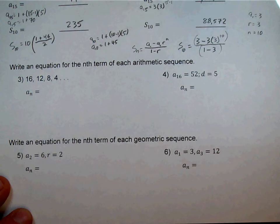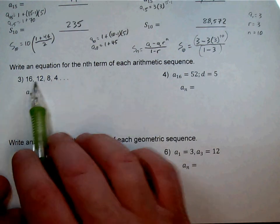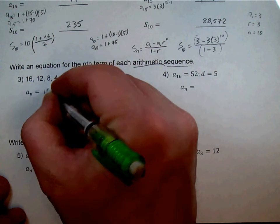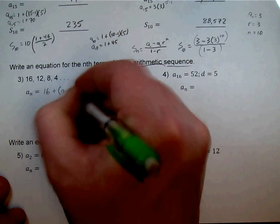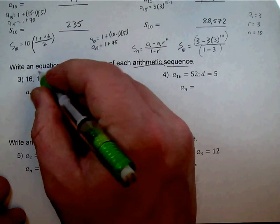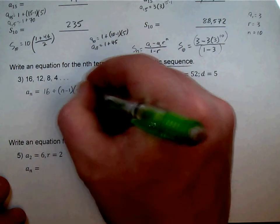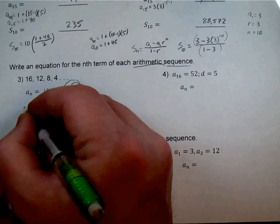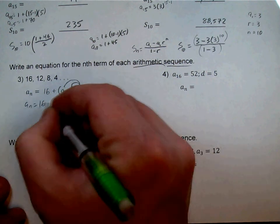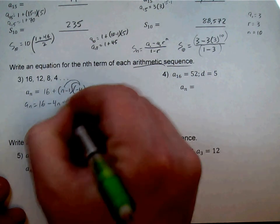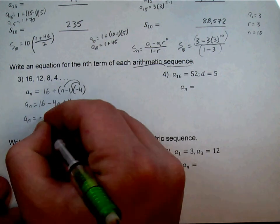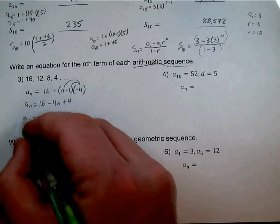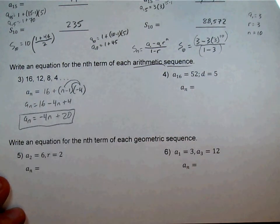Number 3: we should recognize that it is an arithmetic sequence. So we take our first term, which is 16, plus N minus 1, times D, which is what we're increasing by. In this case, we're decreasing by 4, so it's negative 4. I distribute the negative 4: so minus 4N plus 4. I have like terms — negative 4N, and 16 plus 4 makes it 20. So negative 4N plus 20 is the answer.